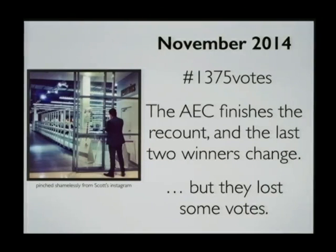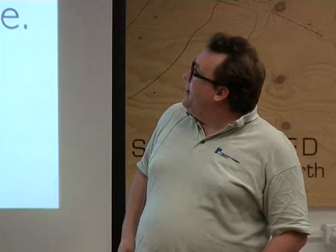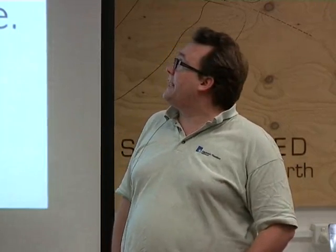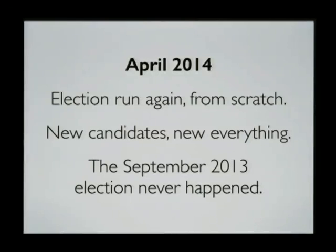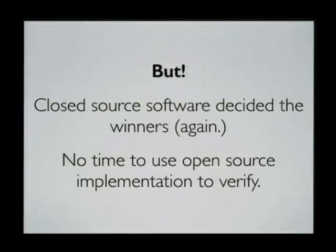The AEC eventually did a recount, and the two last winners changed - so of the six senators up for re-election, the last two changed. But then they lost some of the votes, which was somewhat upsetting considering how much work people had put in from all the parties into the recount. Then in April 2014, that election was run again from scratch - new candidates, new everything. It was legally as if the September 2013 Senate election had never happened.